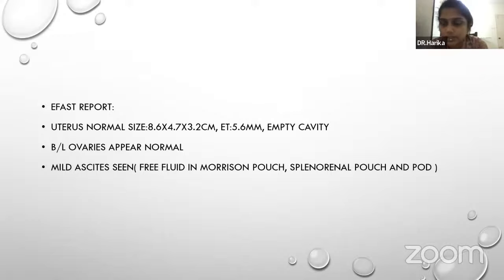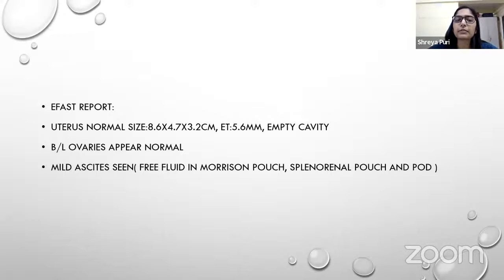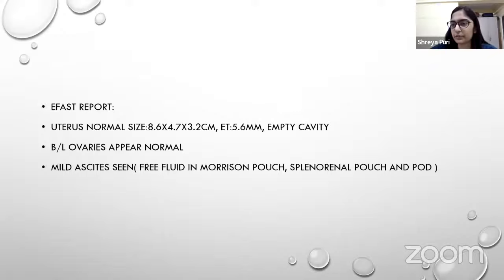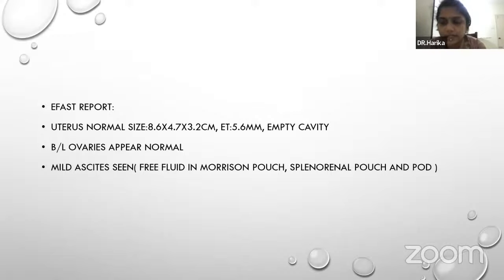The instructor asks what the ultrasound infers without assuming ectopic. The student suggests it could be pelvic inflammatory disease — free fluid without a gestational sac can fit PID as well. The instructor agrees and emphasizes clinical correlation: the patient has severe pain abdomen and is hemodynamically unstable, still on noradrenaline to maintain blood pressure. When correlated clinically, this points more strongly toward ectopic pregnancy.